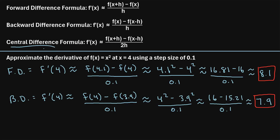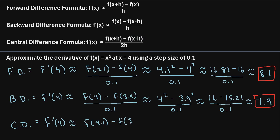Now let's try the central difference formula. The central difference formula says the derivative at 4 is approximately equal to f of x plus h minus f of x minus h, divided by 2 times the step size. So that's f of 4.1 minus f of 3.9, divided by 2 times 0.1, which is 0.2.